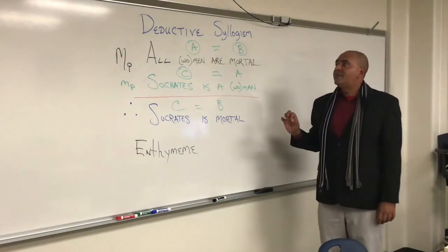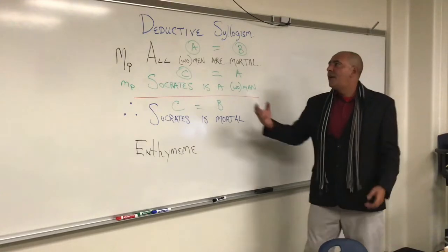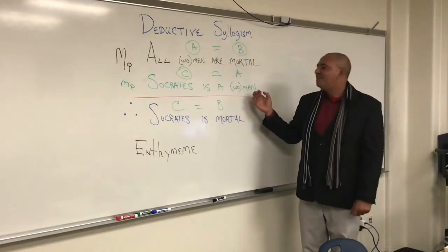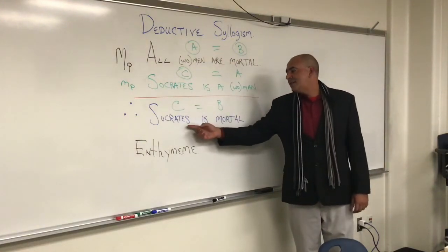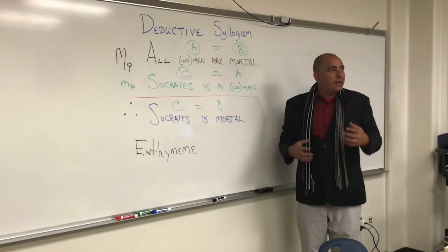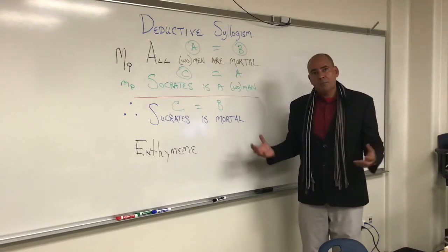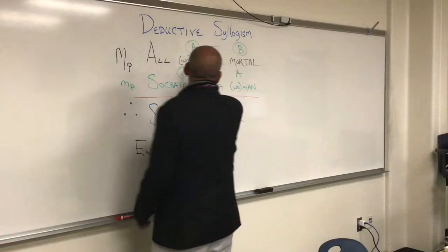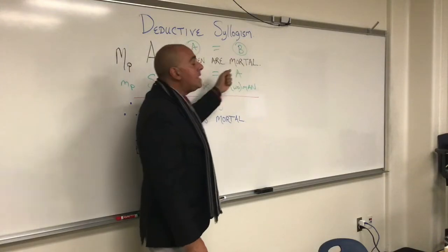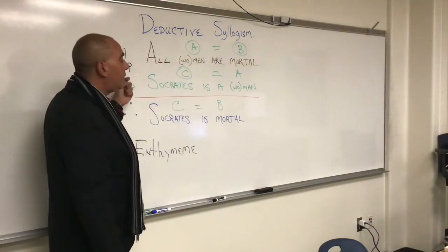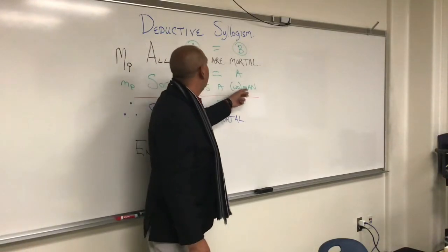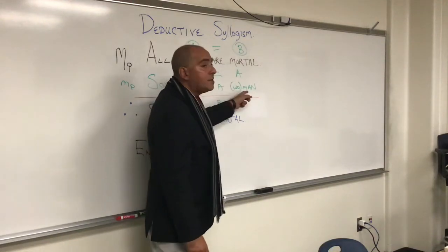Inside of the deductive syllogism, let's say we take the major premise that all women are mortal. And then we can say that Socrates is a man or woman. And then finally we would come to the conclusion that Socrates is of course mortal. From these presuppositions we can internally create a logic structure that puts them all together. So if we say that the phrase 'woman or men' is A, and 'are mortal' is B, then we take a minor premise — a subset of that original claim — saying Socrates, a singular person inside of that subset, is a man. So A equals B, and C equals A.